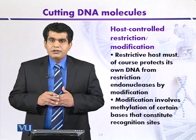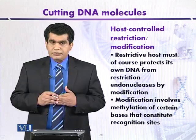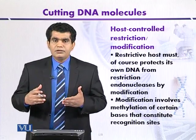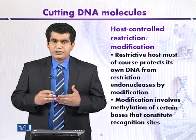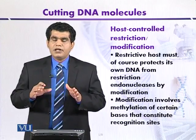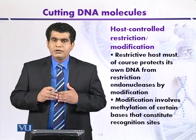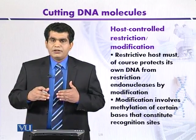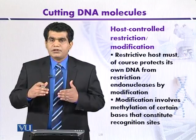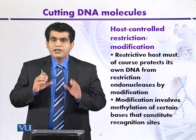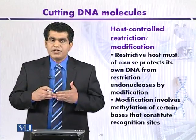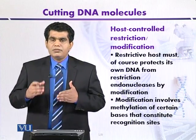Different types of restriction enzymes are present in host organisms. The question is: how do host organisms like E. coli or other bacteria protect their own DNA from their own restriction enzymes, since restriction enzymes can attack any type of DNA? The main mechanism is that the host organism protects its own DNA from restriction enzymes through the process of methylation. Within certain recognition sites where restriction enzymes could attack, the DNA is methylated and modified, protecting it from the restriction enzymes.